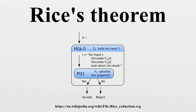By the corollary to the recursion theorem, there is an index such that φ returns the result. But then, if the index is in F, then φ is the same function, and therefore leads to a contradiction; and if the index is not in F, then φ is the other function, and therefore also leads to a contradiction. In both cases, we have a contradiction.